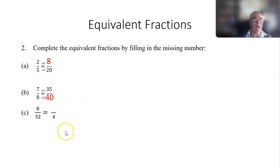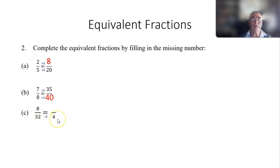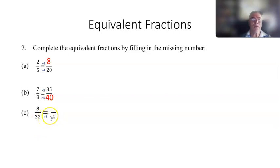Here's one more example: 8 over 32, and we notice the denominator is getting smaller, which indicates we're going to divide. 32 divided by 8 gives us 4. We have to do the same with the numerator because they are equivalent fractions — 8 divided by 8 is 1. So 8/32 equals 1/4.